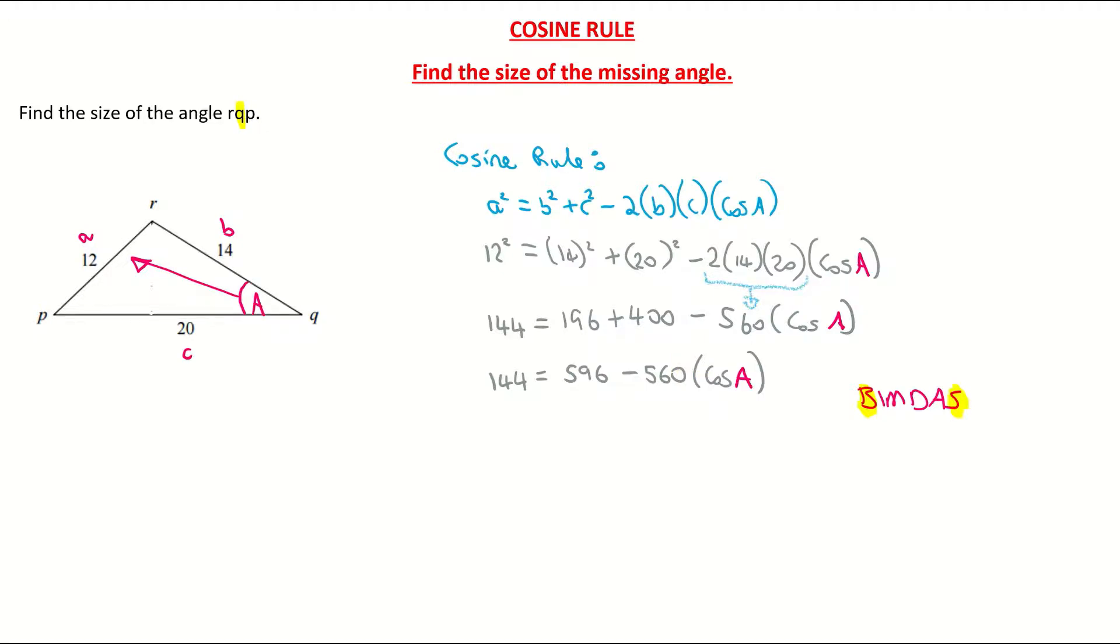So what I'm going to do is I'm going to isolate the numbers. I'm going to bring the numbers to the left-hand side and the cos A to the right-hand side. So depending on how you do this yourself, you're subtracting 596 from both sides, or in other words, you're basically moving over the 596 to the other side of the equals. So I have 144 subtract the 596 from both sides, and that's equal to -560 times my cos of my angle.